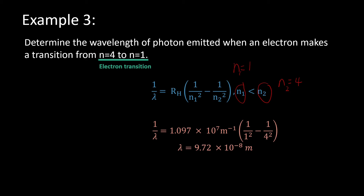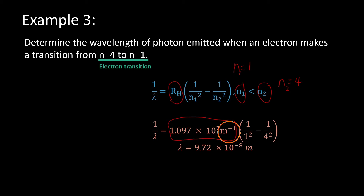For this question, note the Rydberg constant used must be the one related to wavelength, which is 1.097 times 10 to the power of 7 per meter. You can look at the unit to determine whether the Rydberg constant is related to energy or to wavelength — the wavelength-related constant has units of per meter, while the energy-related one has units of joules. I will show you in the next example how to use the Rydberg constant involving energy, which has units of joules.